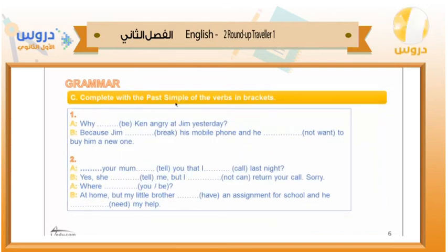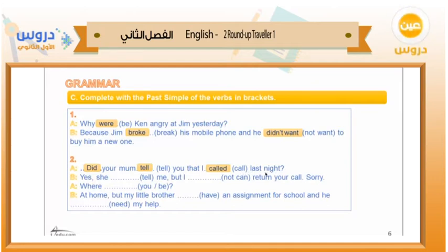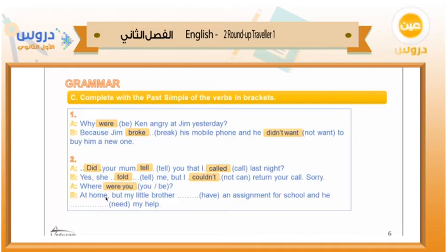Complete the past simple of the verb in brackets. Number one: where was Yasser angry at Jim yesterday? Because Jim broke his mobile phone and he did not want to buy him a new one. Number two: did your mom tell you that I called last night? Yes, she told me, but I couldn't return your call. Sorry, were you at home? But my little brother had an assignment for school and he needed my help.